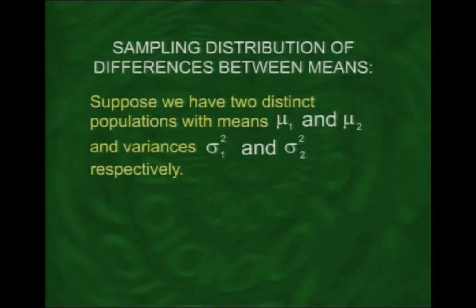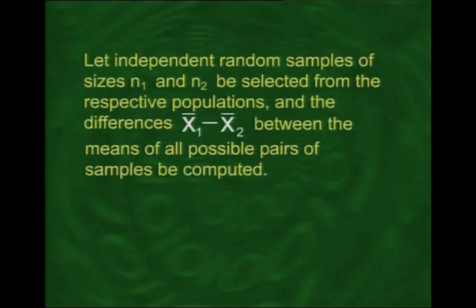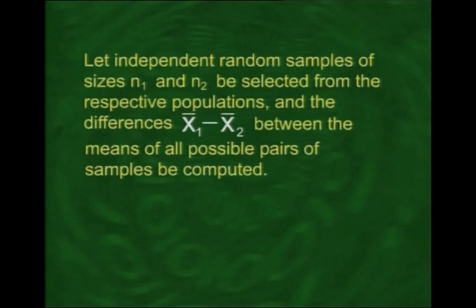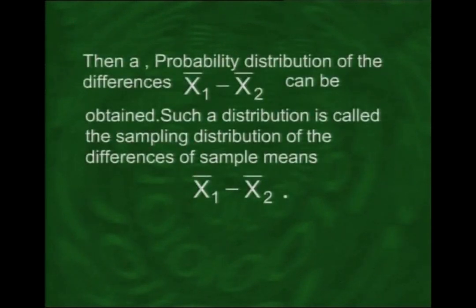Let me explain this formally. Suppose we have two distinct populations with means mu1 and mu2 and variances sigma1-squared and sigma2-squared respectively. We select independent random samples of sizes n1 and n2 from the respective populations and compute the differences x1-bar minus x2-bar between the means of all possible pairs of samples. The probability distribution of these differences is called the sampling distribution of the differences between sample means.